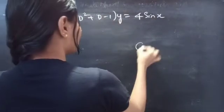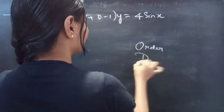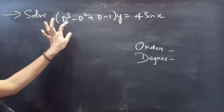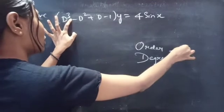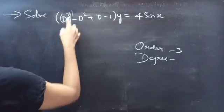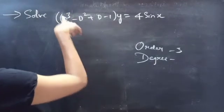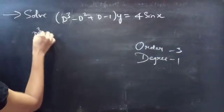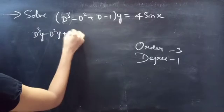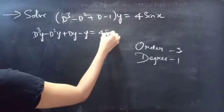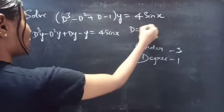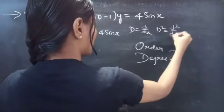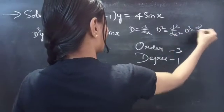Firstly, let's find the order and degree of the given differential equation. Identify the highest derivative — here D³ is the highest derivative, so 3 will be our order. The highest power of the highest derivative will be our degree, so degree will be 1.